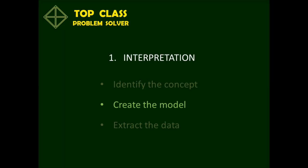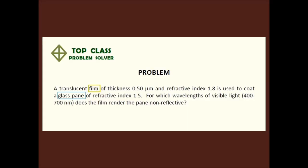The next step of the interpretation is to create the model and represent the model in a diagram. We have the film, and we have a glass pane. Let us look at the refractive indices of the film and the glass. The film has a refractive index of 1.8, and the glass pane has a refractive index of 1.5.